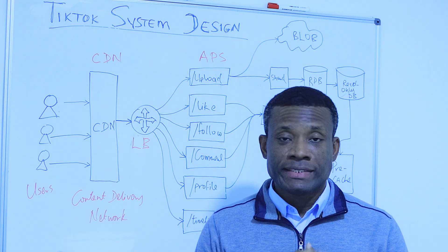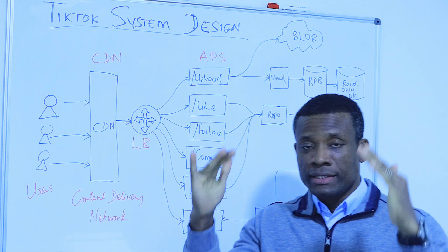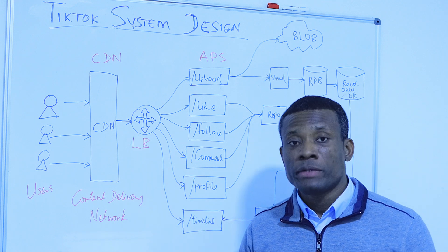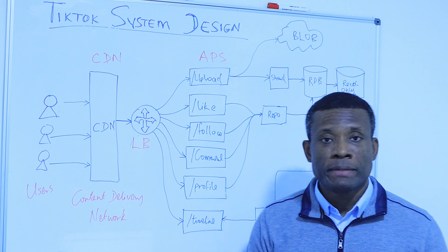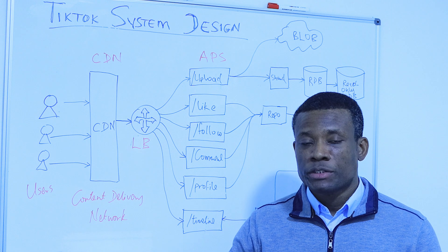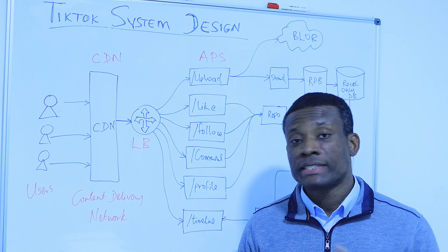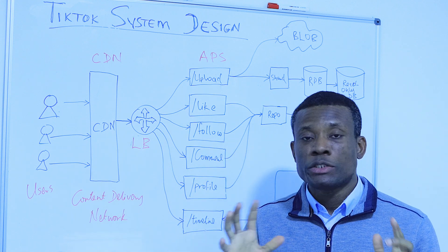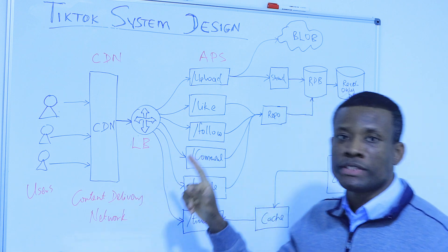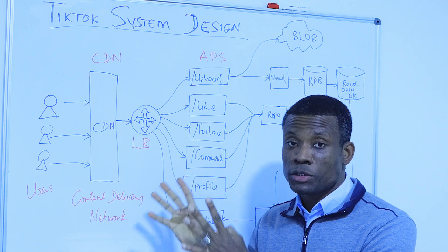This is basically the system design architecture for TikTok. In the first part we outlined the six steps we need to follow in system design: functional requirements, non-functional requirements, API endpoints, database choice and schema, performance and caching, and scalability. These six points will now lead you to this architecture. Let me tell you how these six points actually match to the architecture you see here.